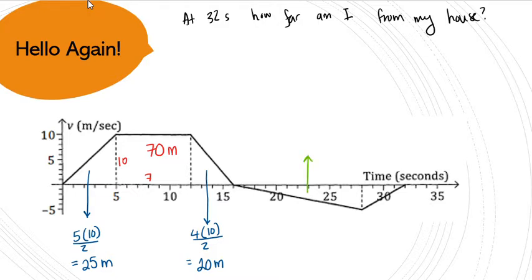The base for this one, I believe, is 12. The height is negative 5. And I'm going to leave that negative. And I'm going to divide it by 2 and get negative 30 meters. The area is negative, so is the distance, because the time is not going to be negative. And our last triangle is just a little 4 times negative 5 divided by 2 equals negative 10 meters.